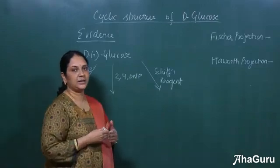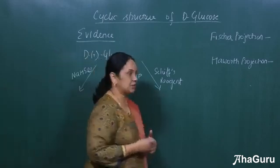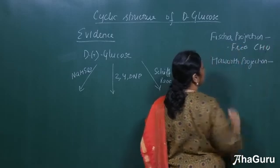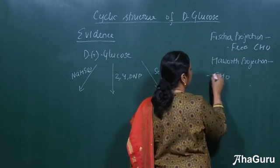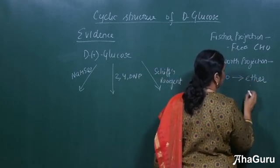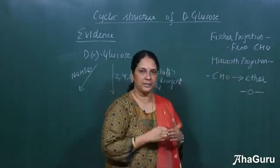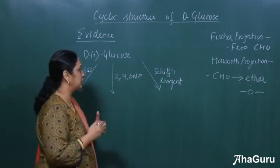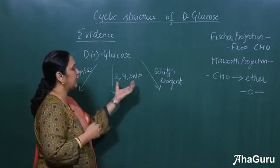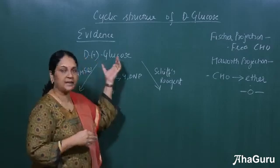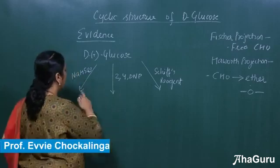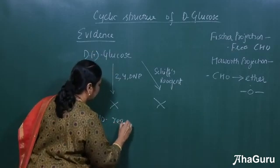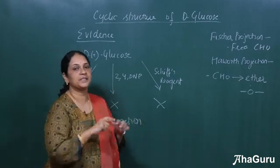Now let us see the evidence which proves that glucose also exhibits a cyclic structure. So what are the two structures we saw? There is a Fischer projection where free CHO group, there is an open chain structure where we have a free CHO group and the Haworth projection, this free CHO group gets converted to an ether-like structure. There is an O-linkage here. So these are the two structures which are in equilibrium. So now when we take the cyclic structure, actually if you see the open chain structure which has a free CHO group should react with all these three reagents: sodium bisulfite, 2,4-dinitrophenylhydrazine and Schiff's reagent. But whereas the cyclic structure, when we take the cyclic structure, there is no CHO group, so it does not give these three reactions. No reaction with all these three reagents. So this proves that glucose also exhibits the cyclic form.